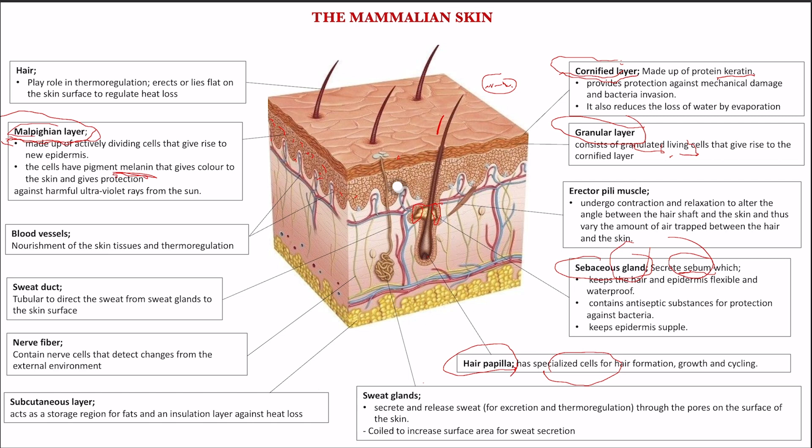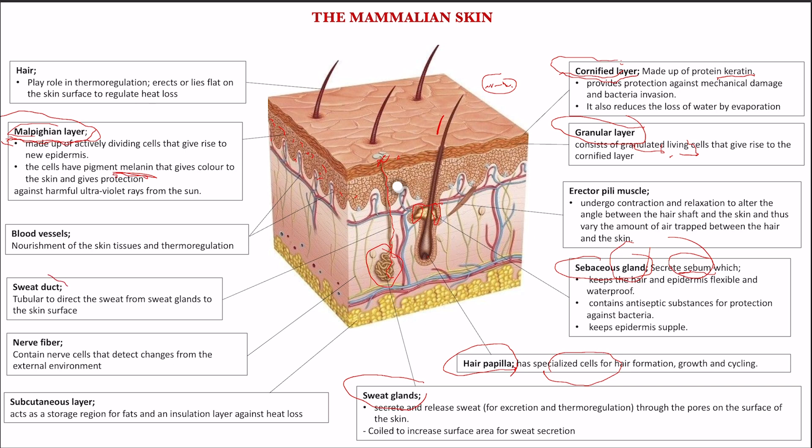It is not only the sebaceous glands that are secretory in our skin. What happens during physical exercise? We sweat. There are structures in the skin responsible for sweating — these are the sweat glands, highly coiled structures. Their role is secretion of sweat. Sweat has a role in excretion and a role in thermoregulation. The sweat gets out from the skin to the skin surface through tubular ducts that we call the sweat ducts, which direct the sweat from the sweat glands to the skin surface.